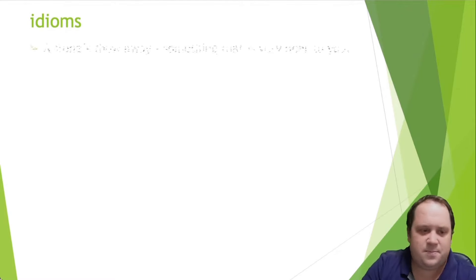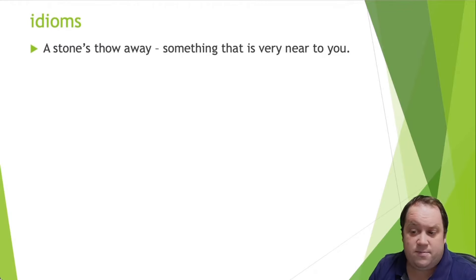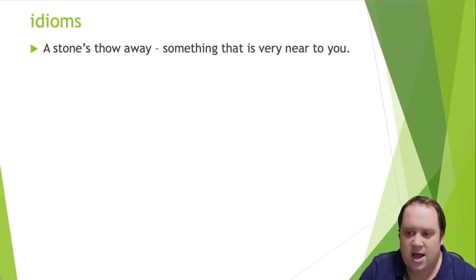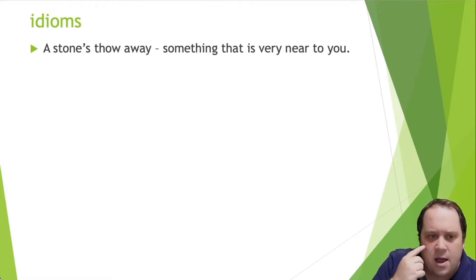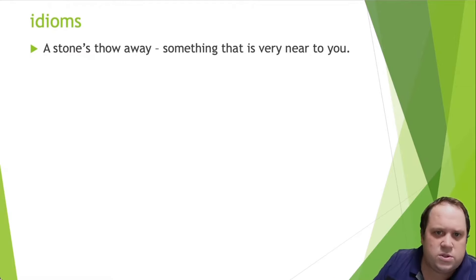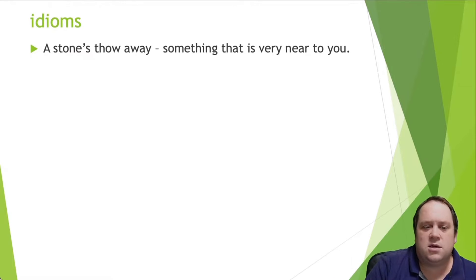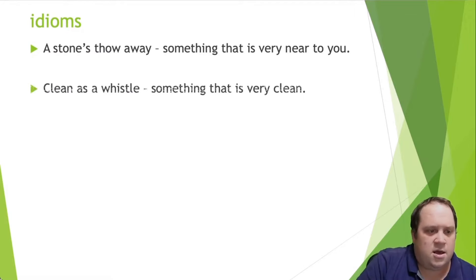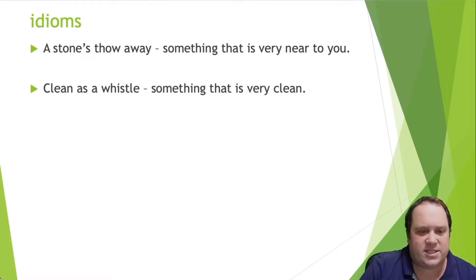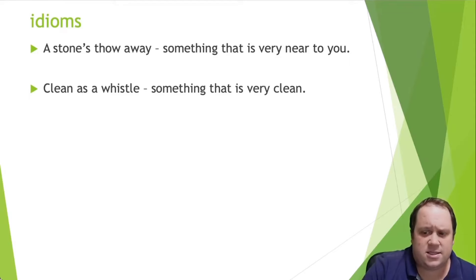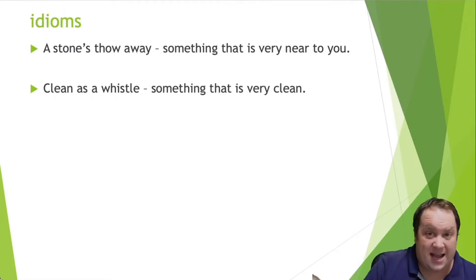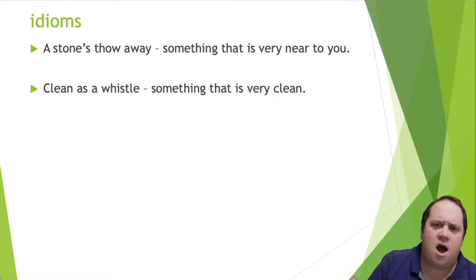Now for idioms — we've got six for today. First, 'a stone's throw away.' You could also just say 'a stone's throw' — some people add 'away,' but either is fine. The next one is 'clean as a whistle,' meaning something that is very clean — it could be a car, it could be a place. You could say 'my car is clean as a whistle.'